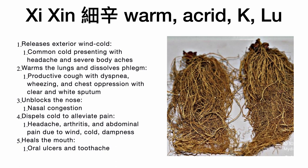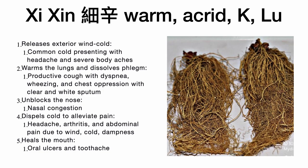Xi Xin can be used for productive cough with dyspnea, wheezing, and chest depression when the patient presents with clear and white sputum. It unblocks the nose and treats nasal congestion, alleviates pain, and can be used to treat headache, arthritis, and abdominal pain due to wind-cold-dampness. It is also used for oral ulcers and toothaches, and I personally use this herb to help patients after dental implant surgery to heal mouth ulcers.